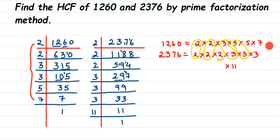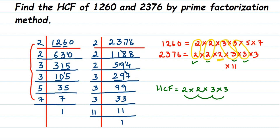To find the HCF, we multiply the common factors we circled — taking one factor from each pair. That gives us 2 × 2 × 3 × 3 = 4 × 9 = 36. So the HCF of 1260 and 2376 is 36. This same method can be applied to any numbers, whether you're finding HCF of two or three numbers. I hope this is clear — if you have any questions, drop a comment. Thank you for watching!